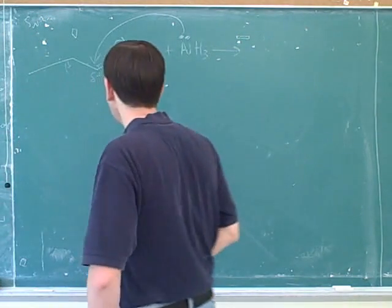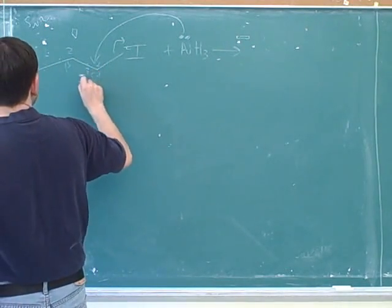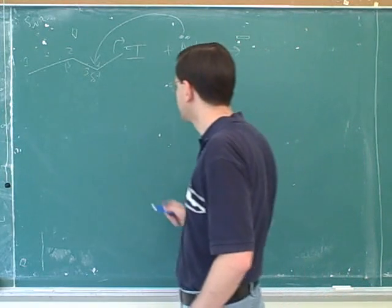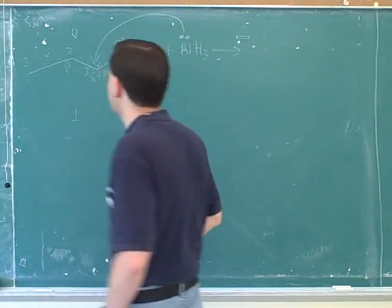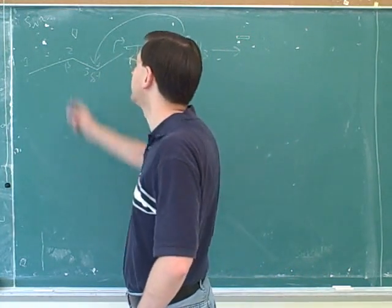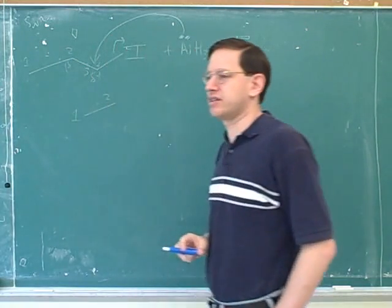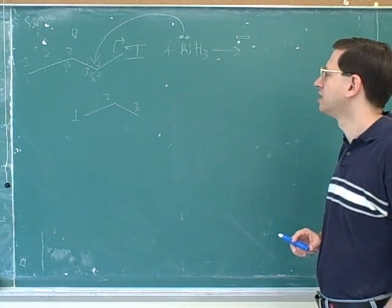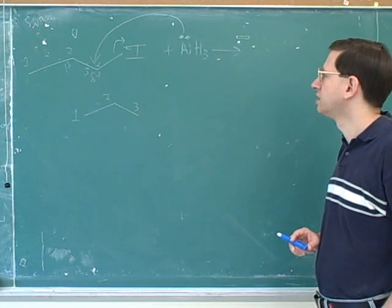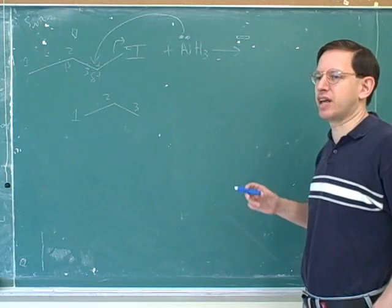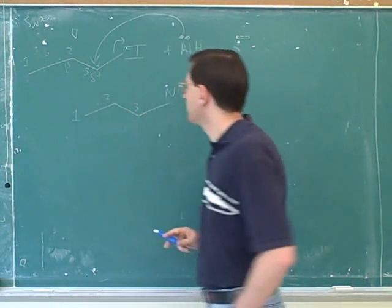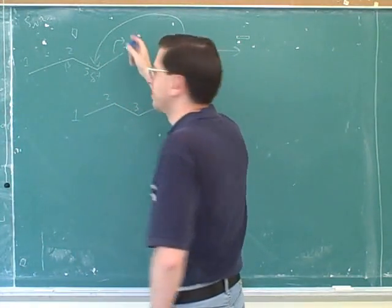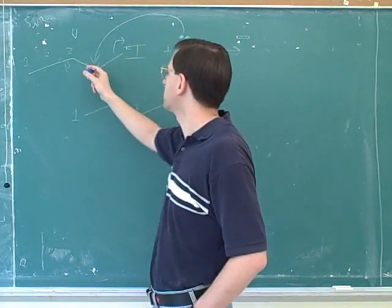We show the leaving group leaving. I'm going to number the carbons — that's a very useful technique when you're having difficulty drawing the products. Now I'm going to draw the product using the one atom at a time technique. Starting with atom number one: who is atom number one connected to? Another carbon — atom number two. Who is atom number two connected to? Atom number three. Who is atom number three connected to in the product? It's connected to the nitrogen. This is the one atom at a time technique — drawing one atom at a time based on the arrows. The arrows tell us who's connected to whom. This arrow tells us the nitrogen is forming a bond to the number three carbon.